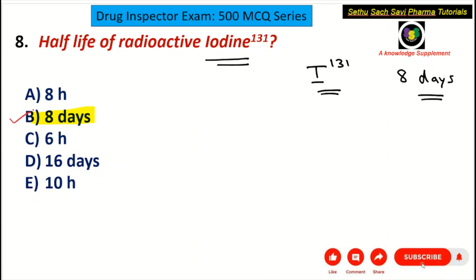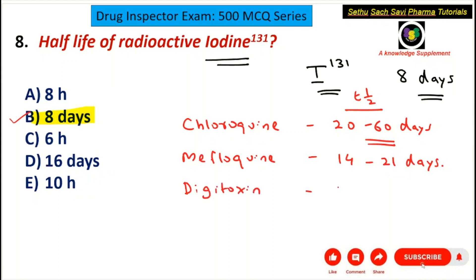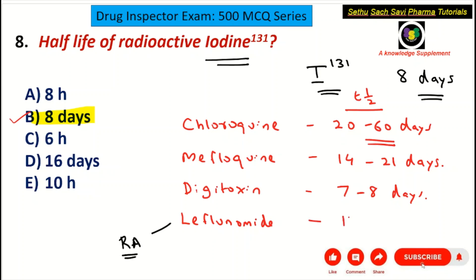Iodine-131 has a very long half-life of 8 days. Some other drugs with long half-lives: the anti-malarial drug chloroquine has a half-life of 20 to 60 days. Mefloquine, also an anti-malarial drug, has a half-life of 14 to 21 days, up to 3 weeks. Digitoxin, given for heart failure, has a half-life of 7 to 8 days. Leflunomide, a drug for rheumatoid arthritis, has a half-life of 14 days, approximately 2 weeks.